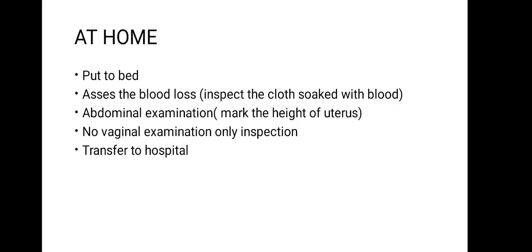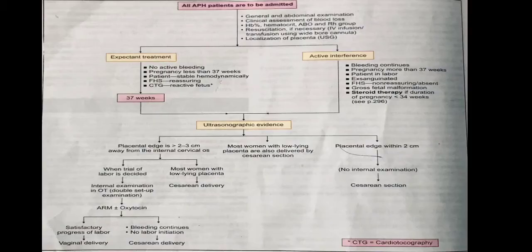If the mother is bleeding at home, immediately place her on complete bed rest and restrict her activities. Assess blood loss by inspecting soaked cloth and perform a quick abdominal examination, marking the height of the uterus. Remember: no vaginal examination — only inspection. Inspect the bleeding, confirm it is bright red, and immediately transfer the mother to the hospital.